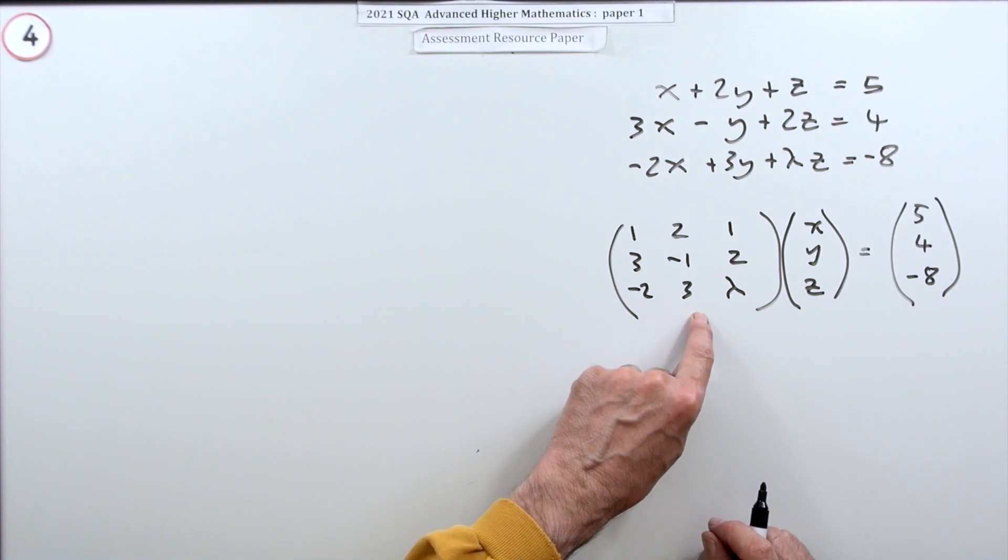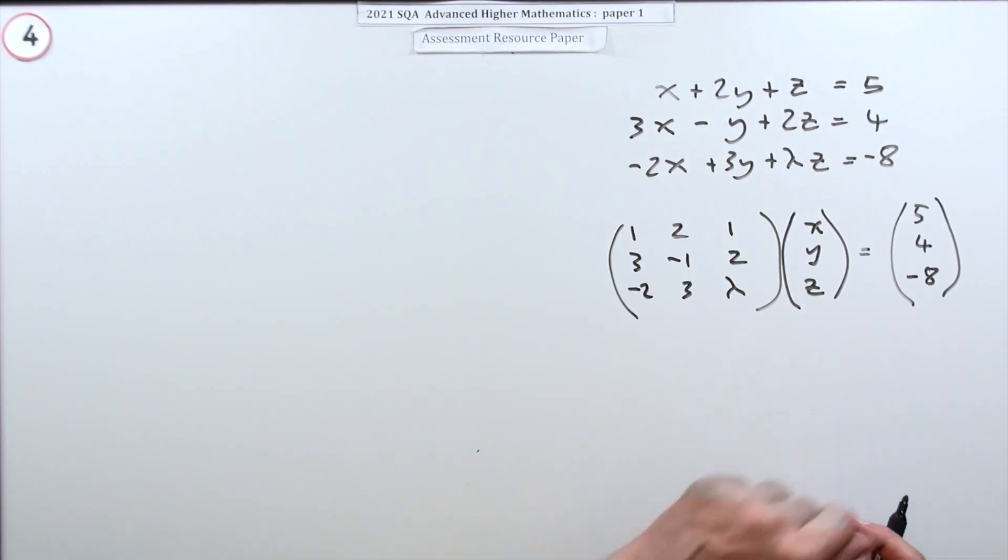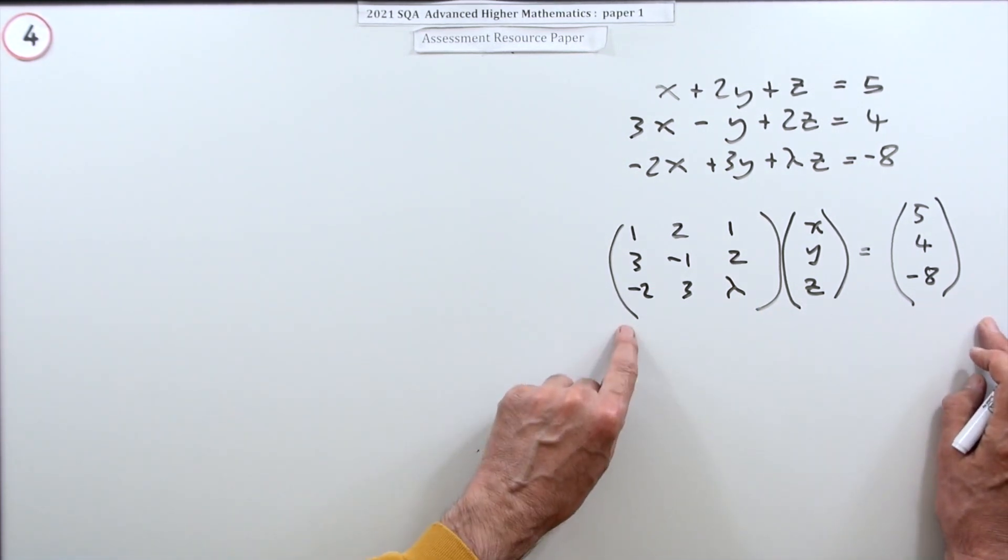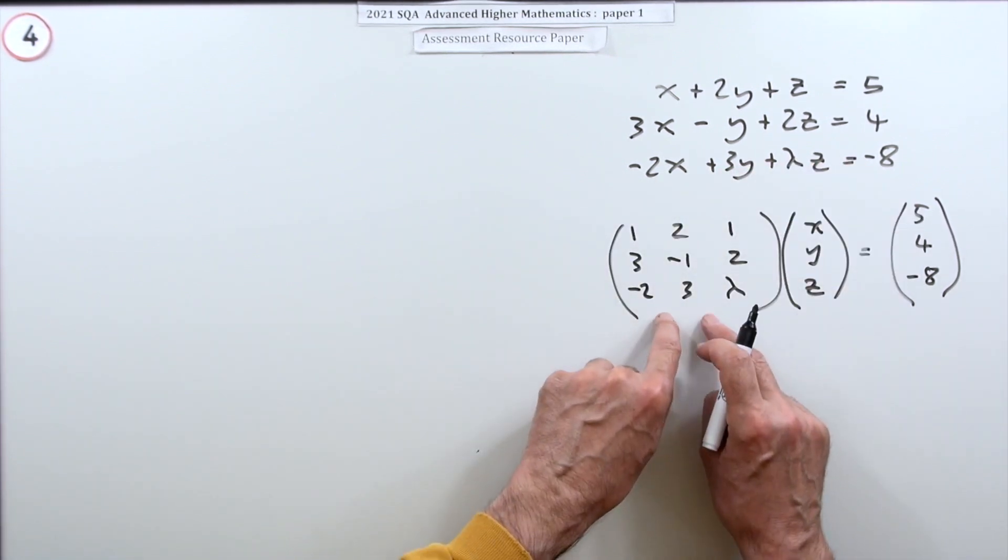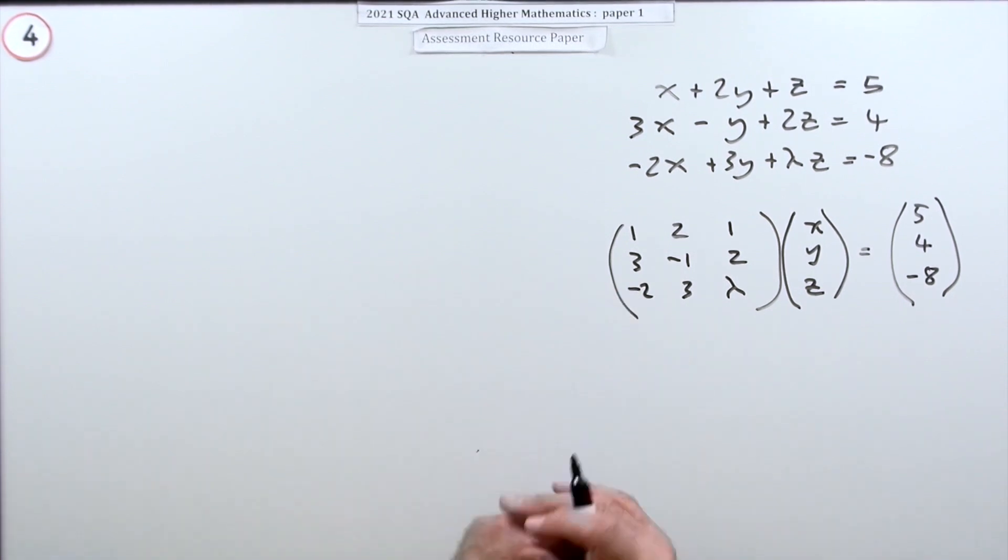Because if you multiply a three by three by a three by one, you get a three by one. So that's the matrix equation. The way you solve that is you multiply both sides by the inverse of this, which is a messy thing to do.